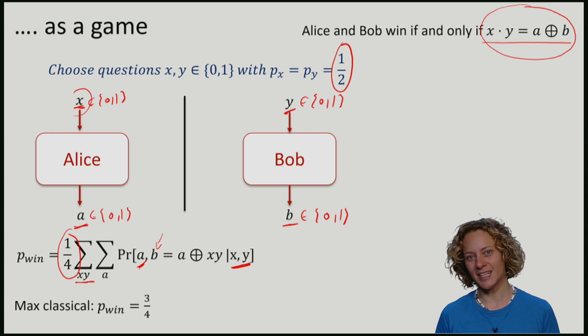It's actually easy to see where these three quarters come from. Note that the winning condition basically says that if one of the questions is zero, then Alice and Bob should be giving the same answer. Only if both x and y are one should they give opposite answers. In three out of the four cases, either x or y is zero. And in this case, giving the same answer is a good thing. So Alice and Bob can just agree to give always the same answer. This means that they're correct in three out of the four cases, leading to the three quarters.